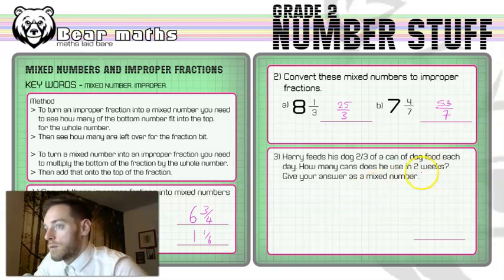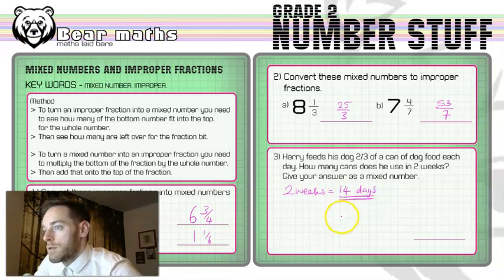But we want two weeks. Now two weeks is 14 days. That's my first thing that I'd be thinking of there. So I'm just going to write down two weeks equals 14 days. You don't have to write this bit down, but that just kind of really helps you know what you need to do for the problem. You're going to take the two thirds and you're going to multiply it by 14 because he's getting two thirds of a can over the 14 days. He's having that every day.